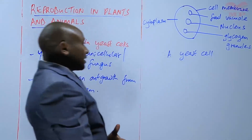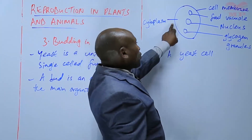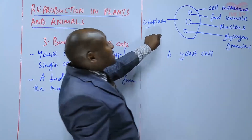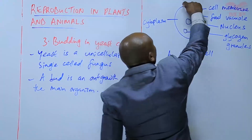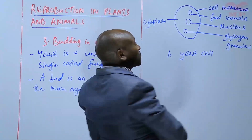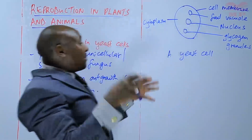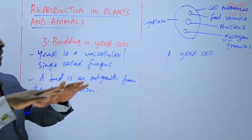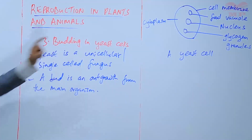During budding, the yeast cell forms an outgrowth on one side, and that outgrowth later becomes another cell while still attached to the main parent cell. Another outgrowth, called a bud, may form on another side and also becomes another cell. In this process, so many outgrowths form on the yeast, leading to a mass of yeast cells — this is the process called budding.